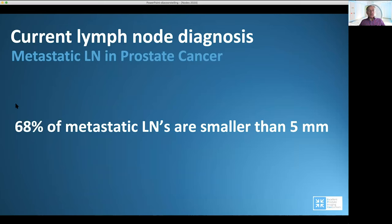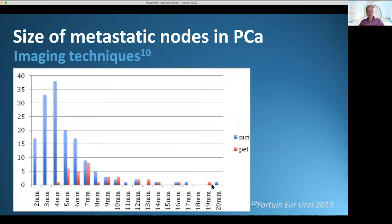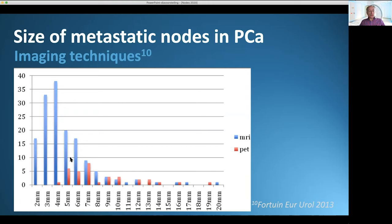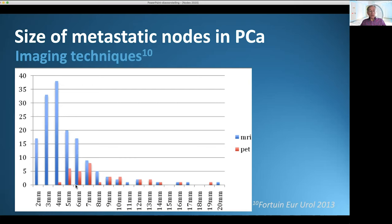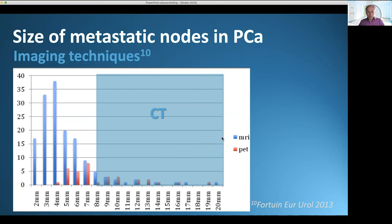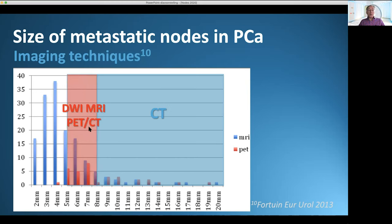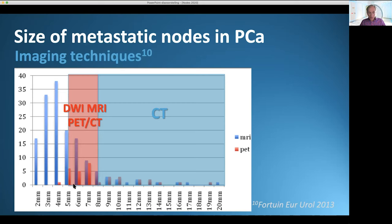In prostate cancer, 70% of all metastatic lymph nodes are smaller than five millimeters. You can see in a schematic drawing that most lymph node metastases in prostate cancer are indeed smaller than five millimeters. With conventional CT, we can detect the large ones — larger than eight millimeters — as pathologic. With PET-CT and diffusion MRI, you can detect lymph nodes from four to five millimeters in size. The small ones you can detect with nano MRI, and a quite significant number of lymph node metastases in prostate cancer are indeed smaller than five millimeters.